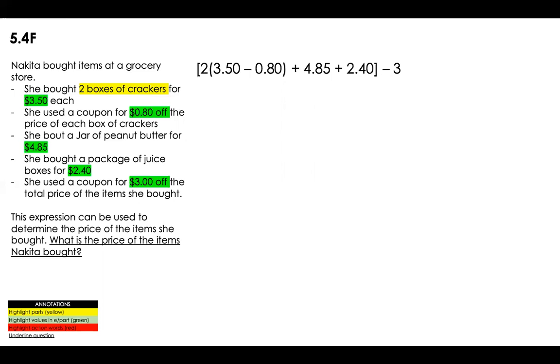Then she bought a jar of peanut butter for $4.85. Then she bought a package of juice boxes for $2.40. And then she used a coupon for $3 off. The expression above can be used to determine the price of the items that she bought. What is the price of the items that she bought?